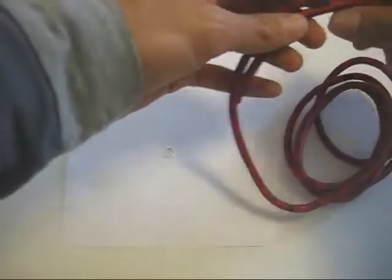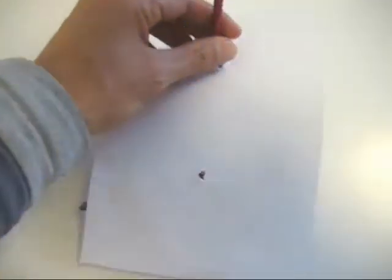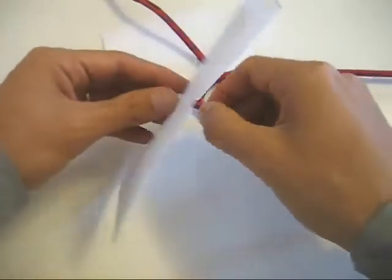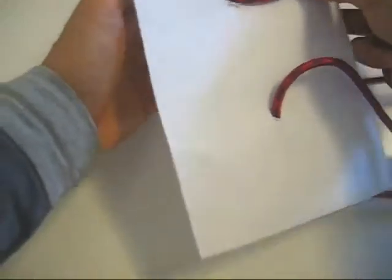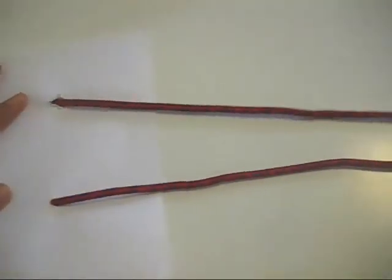So once you've got your materials, what you want to do is feed the loose ends of the cord up through the holes in the paper. And then arrange things so that the loose ends are coming off to the right, like this.